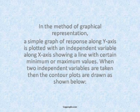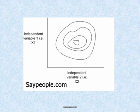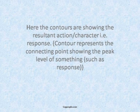When two independent variables are taken, contour plots are drawn as shown in the figure. Here the contours show the resultant action — i.e., the response. A contour represents the connecting point showing the peak level of response.